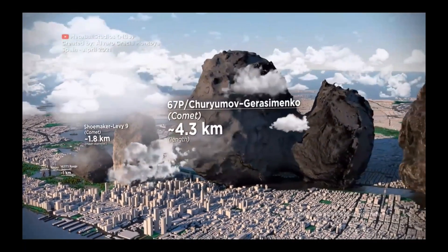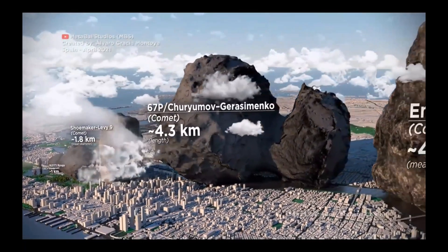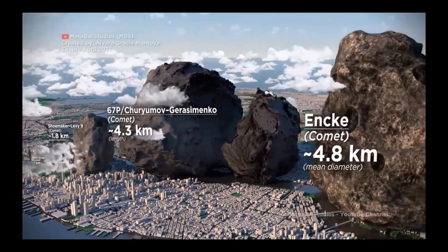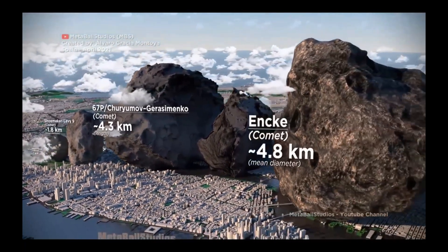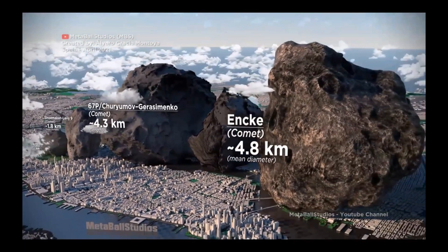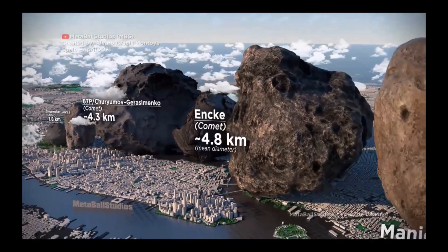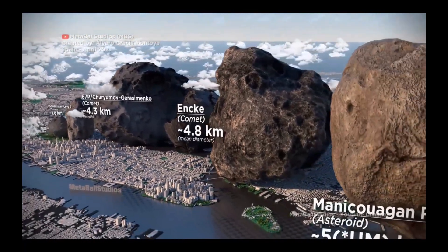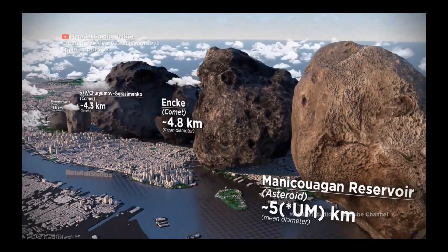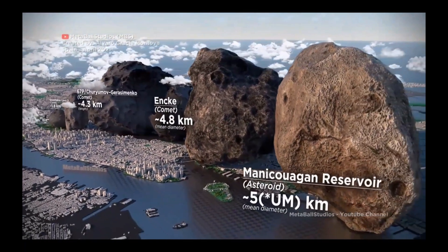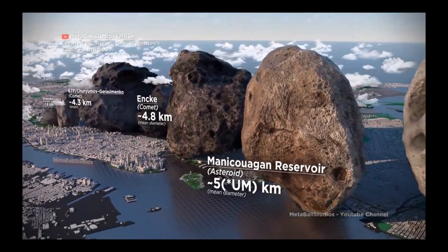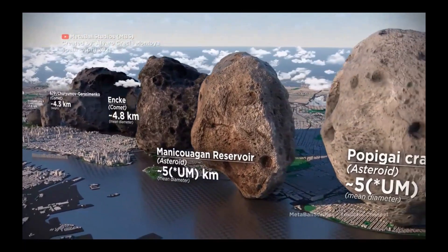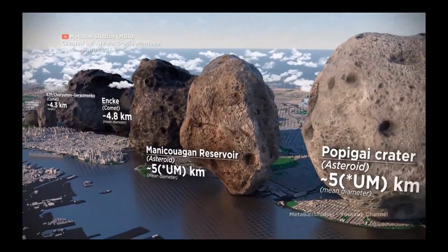Our planets, for example — you cannot really determine from them what the original solar system material was, because the planets have been heated up from within, they've been bombarded, the chemical composition has changed, the pressure has made new material, the inner part is molten, etc. So we lost the history of the material composition which made the solar system from the planets.